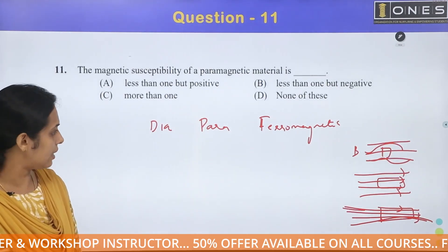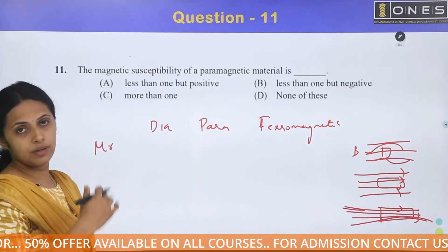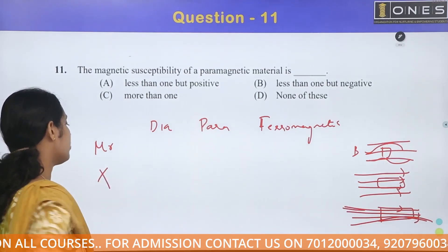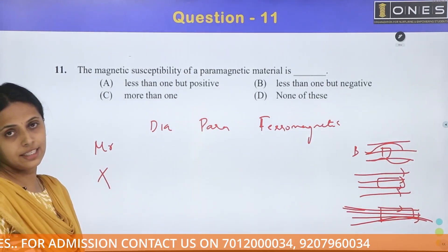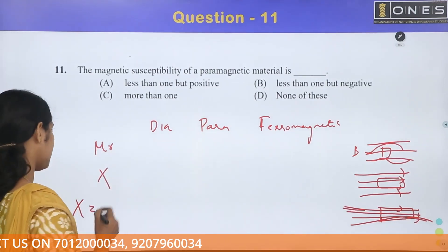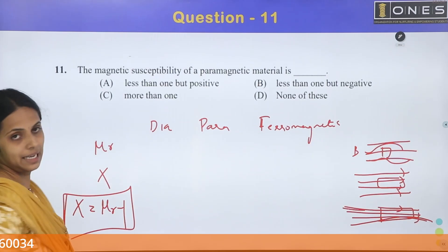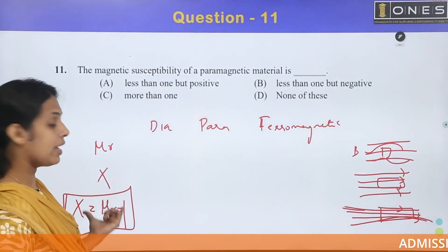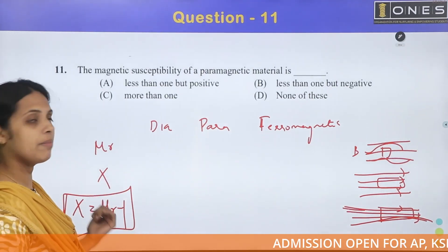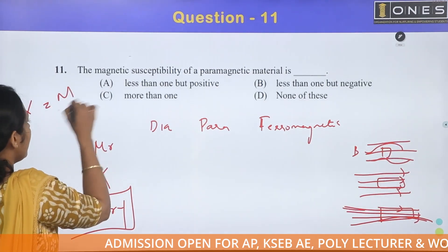Let's look at the general expression. First, we have the value of mu_r and the value of susceptibility. The main factors are mu_r and the susceptibility. What is the magnetic susceptibility? It is mu_r minus 1, and that is the general expression.